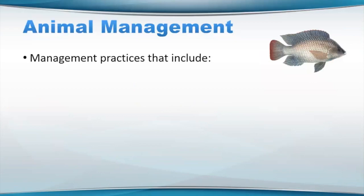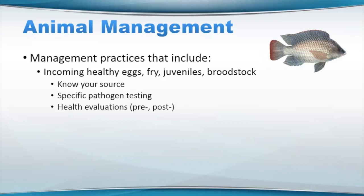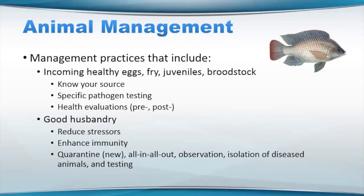Let's start with animal management. Animal management practices include looking at your source animals coming onto the facility — incoming healthy eggs or other life stages like fry, juveniles, or broodstock. You want to know your source. If there are specific pathogens or diseases of concern, are they testing for them? Or are you testing for them before they come in? Are you or are they doing any type of health evaluations at their site or on your site pre- and post-arrival? Included in overall farm health is having good husbandry, which reduces stressors and enhances immune systems. You should also consider quarantine, which is really important.